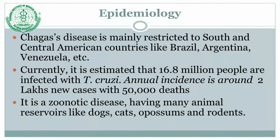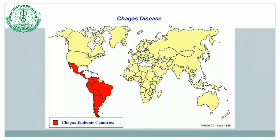Chagas disease is mainly restricted to South and Central American countries such as Brazil, Argentina, and Venezuela. It is estimated that 16.8 million people are currently infected with Trypanosoma cruzi, with an annual incidence of around 200,000 new cases per year and 50,000 deaths. It is both a zoonotic disease — with animal reservoirs including dogs, cats, and rodents — and a vector-borne disease.